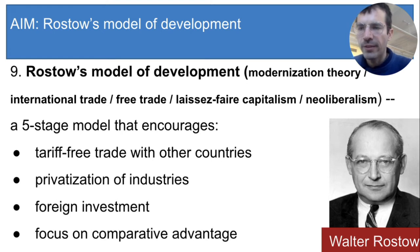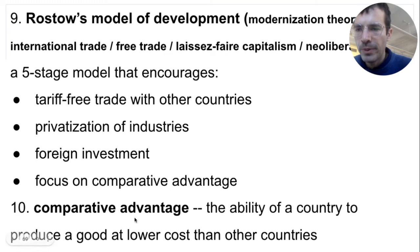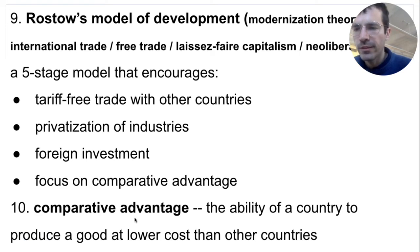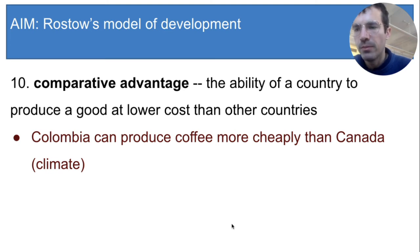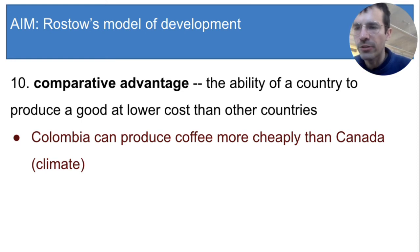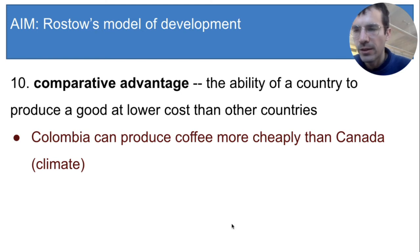Lastly, Rostow says that every country should focus on its comparative advantage. Comparative advantage is the ability of a country to produce a good at a lower cost than another country — meaning some countries can make things more efficiently and cheaply than others. For example, Colombia can produce coffee more cheaply than Canada, because Colombia has a tropical climate good for growing coffee beans while Canada's climate is too cold. Canada could build heated greenhouses to grow coffee, but that would be extremely expensive. So in terms of coffee production, Colombia has a comparative advantage over Canada.